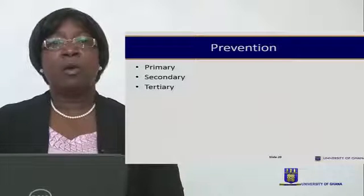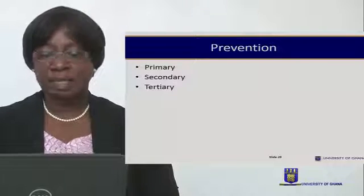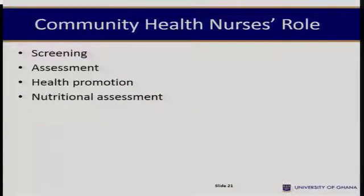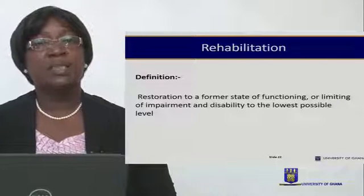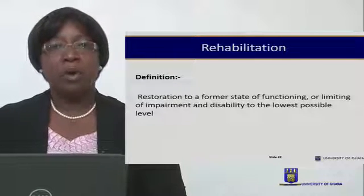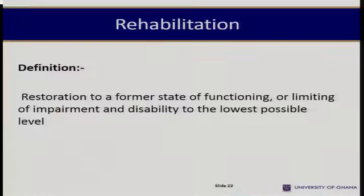Disabilities, impairments, and handicaps can be prevented through primary, secondary, and tertiary prevention. Screening services, health assessments, health promotion, and nutritional assessment may all help. By definition, rehabilitation is restoration to a former state of functioning, or limiting of impairment and disability to the lowest possible level.